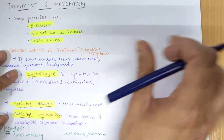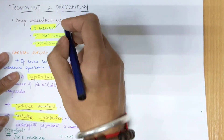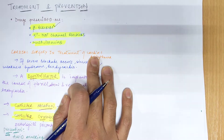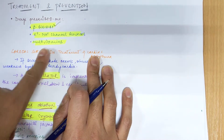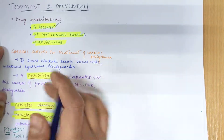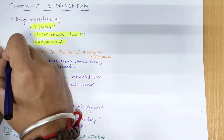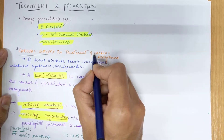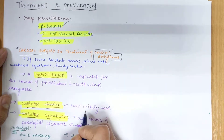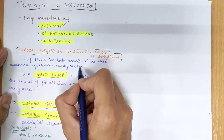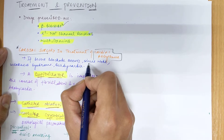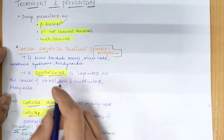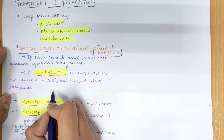For treatment, first we use medications: beta blockers like propranolol, atenolol, and similar medicines, as well as K+ and Na+ channel blockers and multivitamins. If the patient is severe, cardiac surgery can be considered. If severe blockage occurs, such as sick sinus node syndrome or bradycardia, a defibrillator can be implanted.